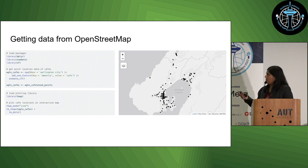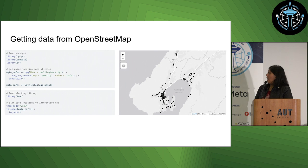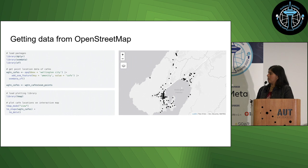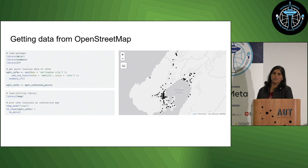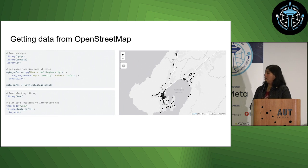In the interactive view, you can hover over the points and get additional information — the name of the cafe, some of the other attributes. And you can do similar things in Python as well with Folium and other tools available there.